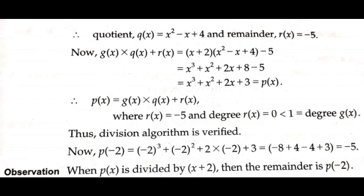From the division algorithm, G(x)·Q(x) + R(x) = (x + 2)(x² - x + 4) - 5 = x³ + x² + 2x + 8 - 5 = x³ + x² + 2x + 3, which is exactly equal to the dividend P(x). Therefore P(x) = G(x)·Q(x) + R(x), where R(x) = -5 and degree of R(x) = 0, which is less than 1, the degree of divisor G(x). Thus the division algorithm is verified.